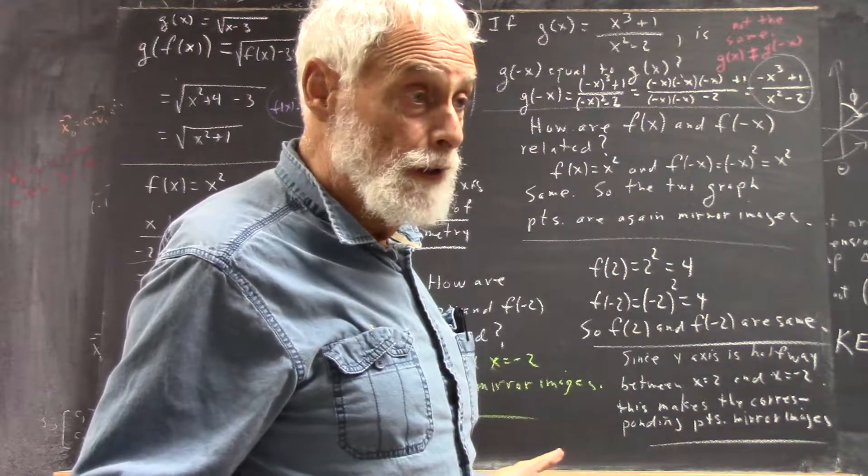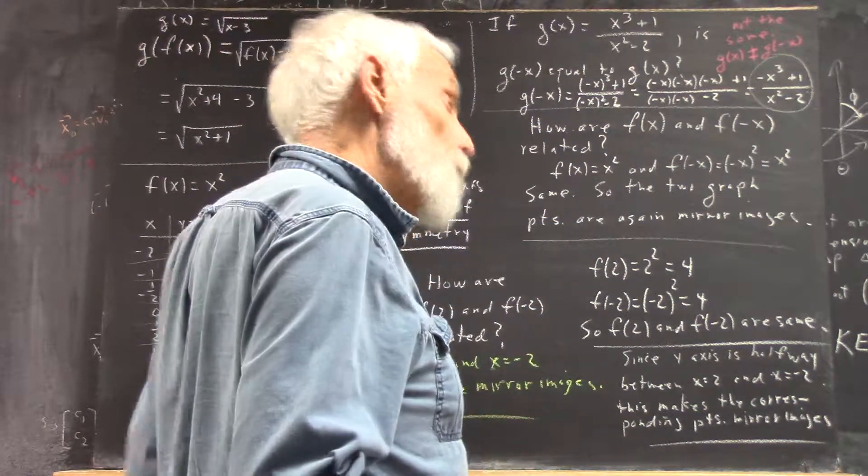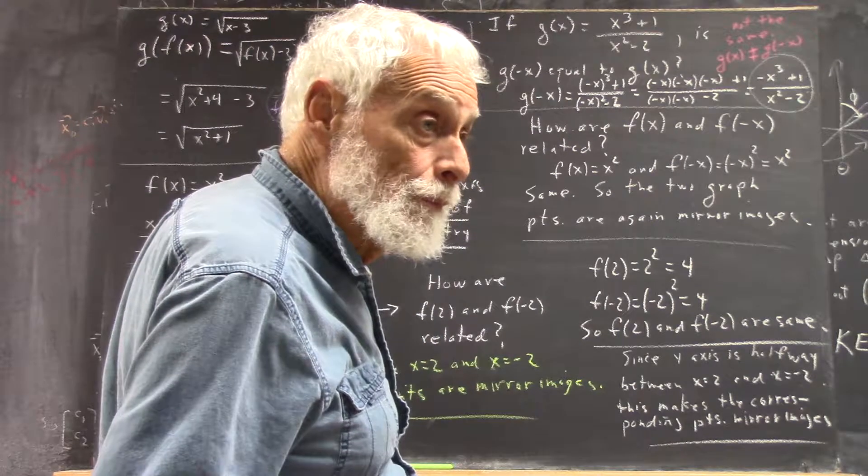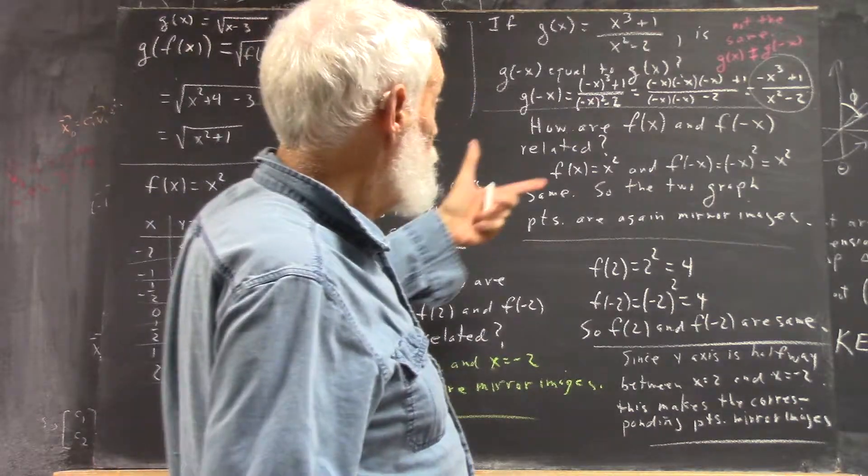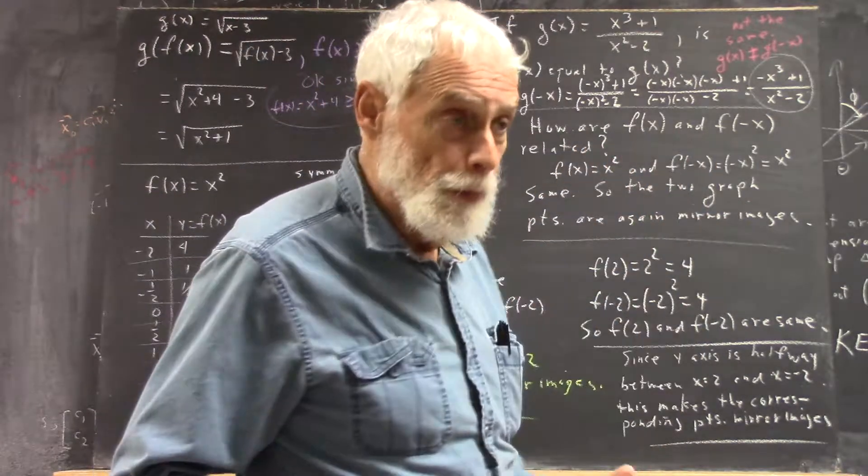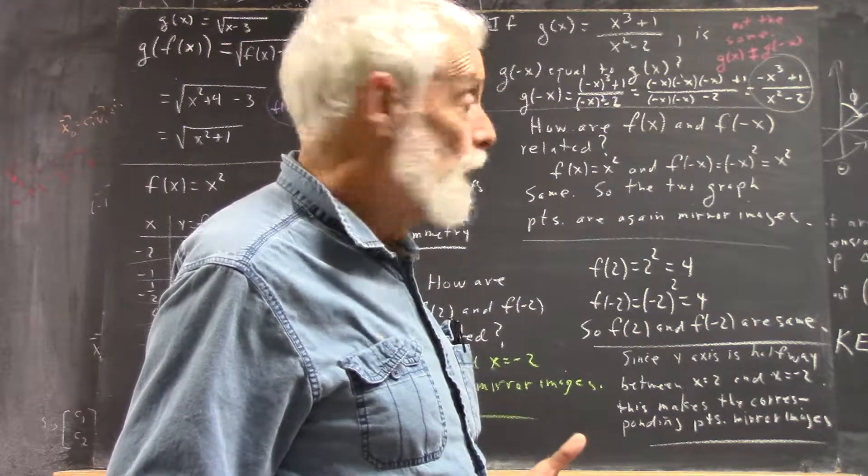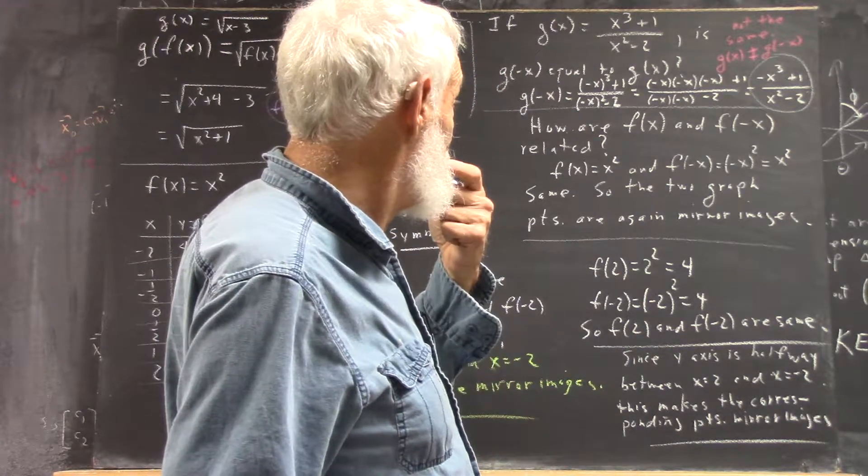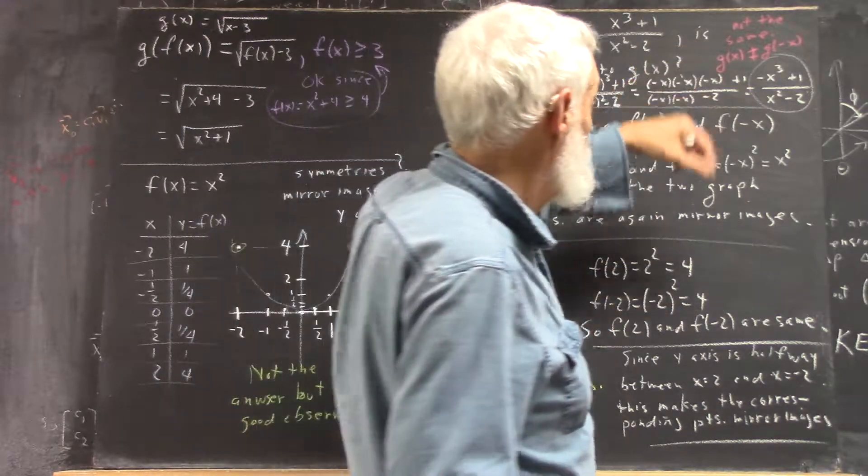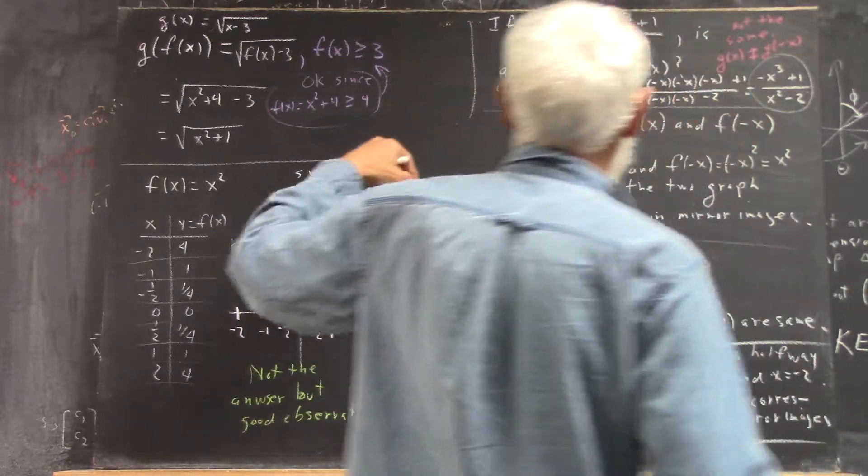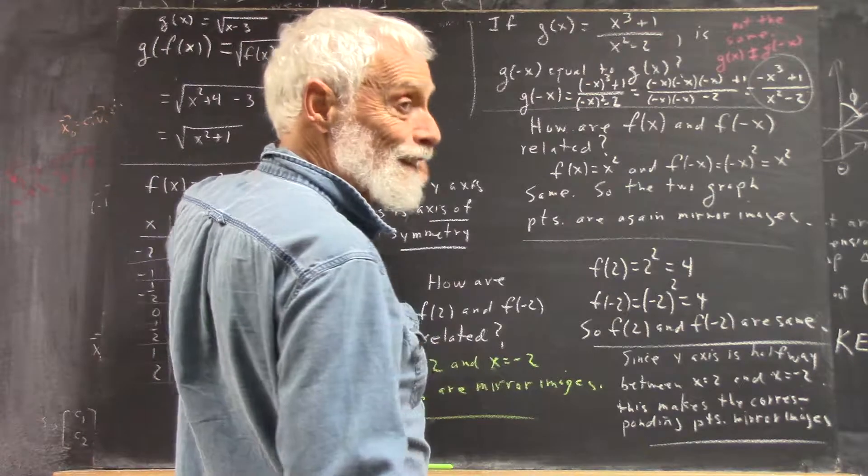G of x is not equal to g of negative x. So you don't have symmetry with respect to the y-axis. So this is not symmetric with respect to the y-axis.